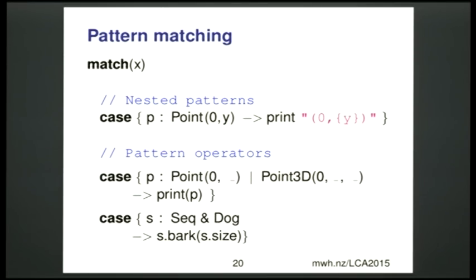We can also do nested patterns — putting patterns inside each other, like algebraic data types. One pattern will match a point with an x coordinate of zero, by putting the zero pattern in place of where you'd bind the x coordinate name. You can also combine patterns with the vertical bar operator for 'or', and the ampersand operator meaning both patterns must match. Both of those are the same operators used for types — if something belongs to both sequence and dog types, you write sequence ampersand dog. Whether you're using patterns or not doesn't have to matter if it's not what you're being taught right now.